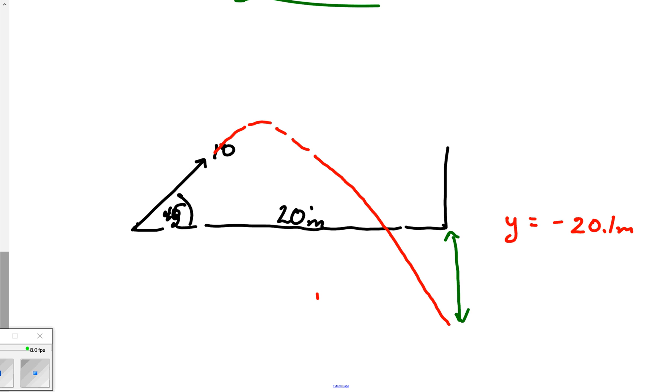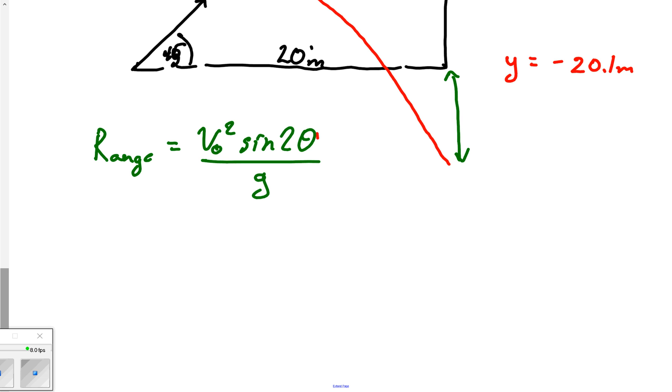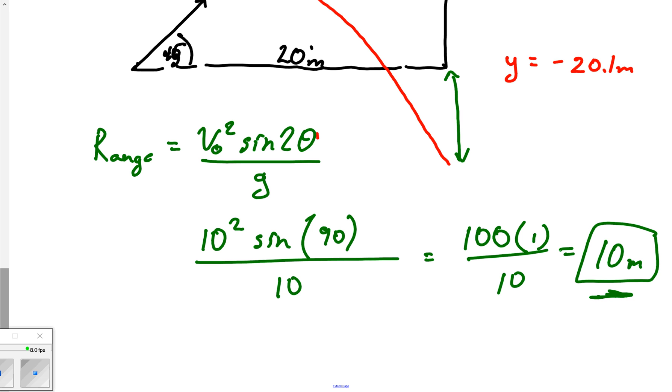Matter of fact, what would be neat is we could actually do a range on this. The range equation is v₀ squared sine 2θ over g. Let's just take a second: v₀ was 10, so that would be 10 squared, sine of 2θ would be 90 degrees, and let's just use a g of 10 for curiosity. That would be 100 times 1 over 10. Sine of 90 is 1. This projectile could only go 10 meters, which means there was no chance for it to ever hit a wall 20 meters away.